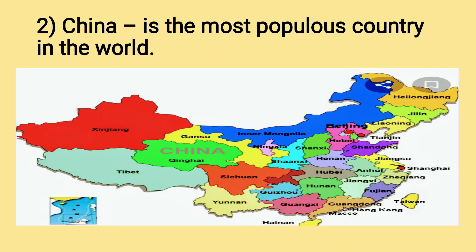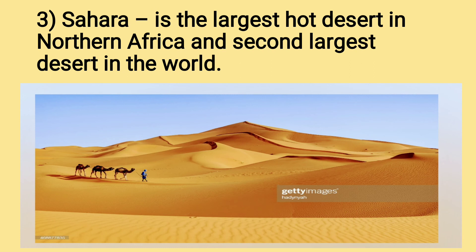The next picture is the map of China. Yes, China is the most populous country in the world. In this map, you can see China here. The next is Sahara. Sahara is the largest hot desert in Northern Africa and the second largest desert in the world.